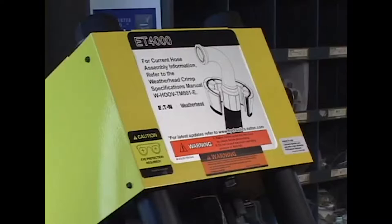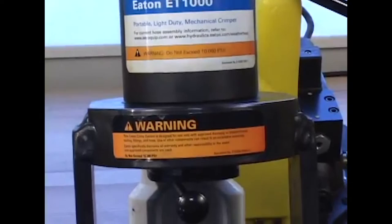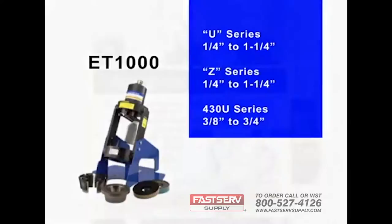The newer mid-size ET1000 is one of the most versatile machines, able to crimp a wide range of hose sizes and a number of power source options. It crimps U series hoses in sizes 1 quarter inch through 1 and 1 quarter inch, Z series hoses with the same dimensions, and 430U hose series from 3 eighths inch through 3 quarters inches.